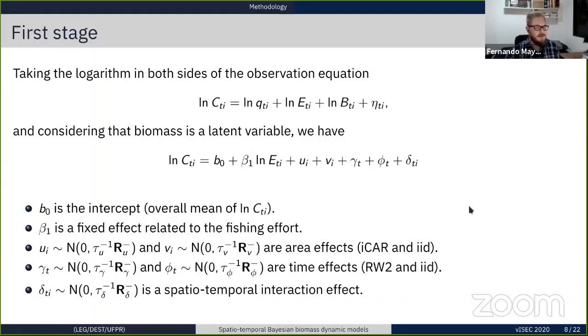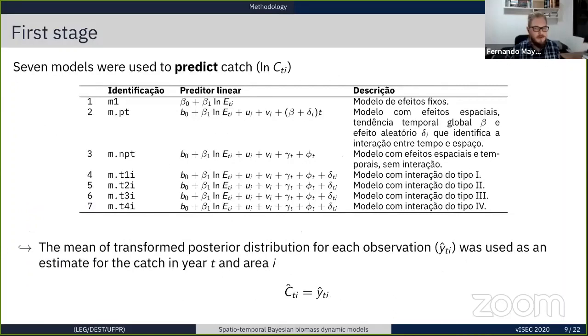Seven models, we were able to build seven different types of models. Sorry for the Portuguese here. The difference between these models is that they assume different structures in time and space, and also four different types of space-time interactions. After the model fit, we used the mean of transformed posterior distributions for each observation. They were used as an estimate for the catch in the next stage.